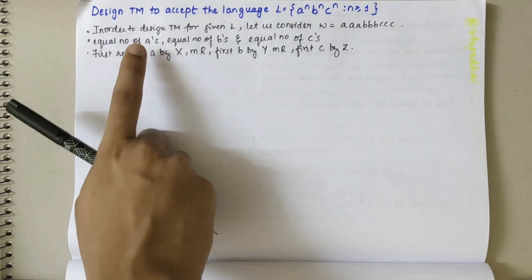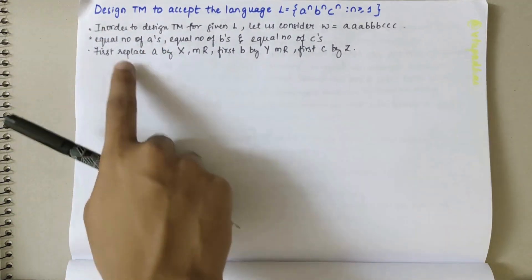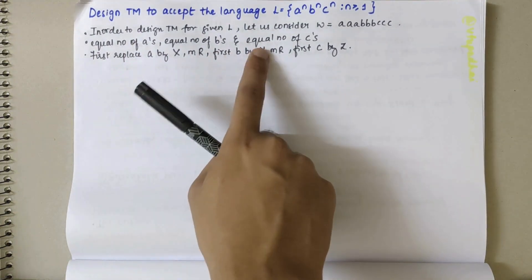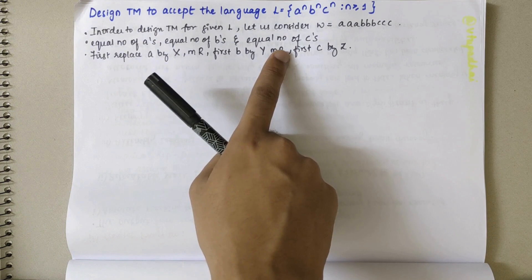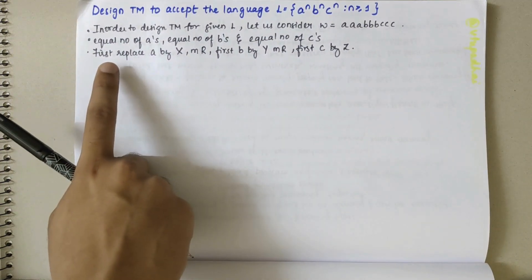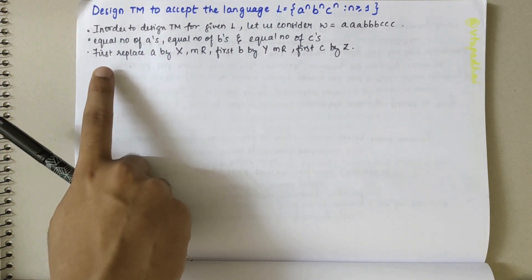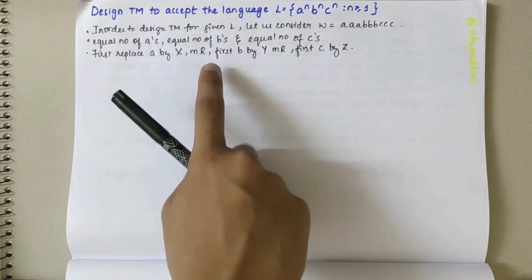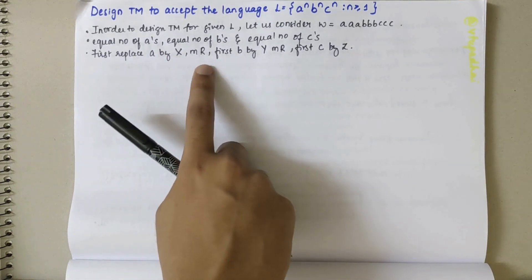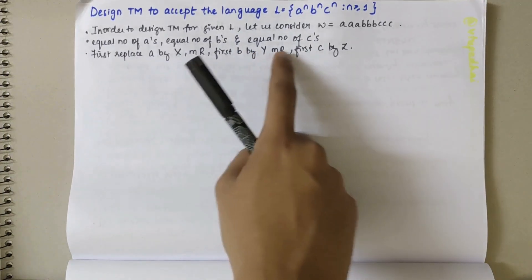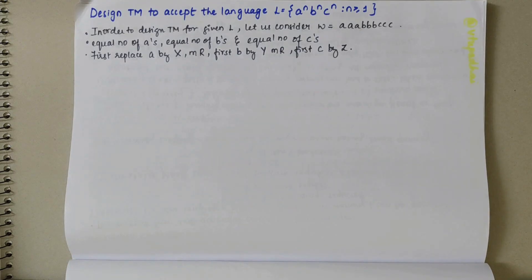The language basically says that we should have equal number of A's, equal number of B's, and equal number of C's. Before we start, first we need to replace A by X, then move right, then replace the first B by Y, move right, then replace the first C by Z, and then move left.